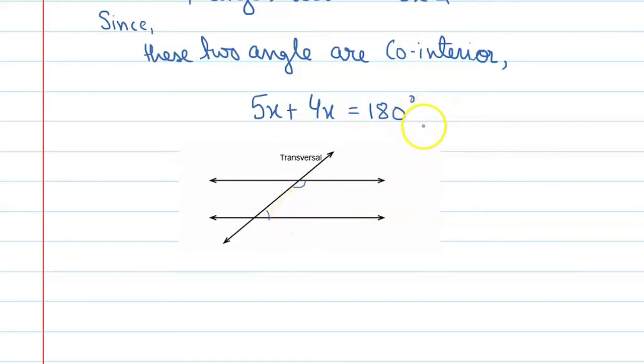So we have 9x equals 180 degrees, which means x equals 20 degrees.